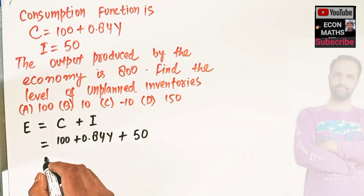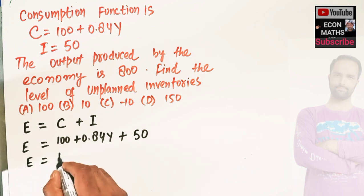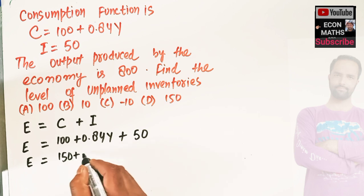So our expenditure function is E = 150 + 0.84Y. This denotes our expenditure.